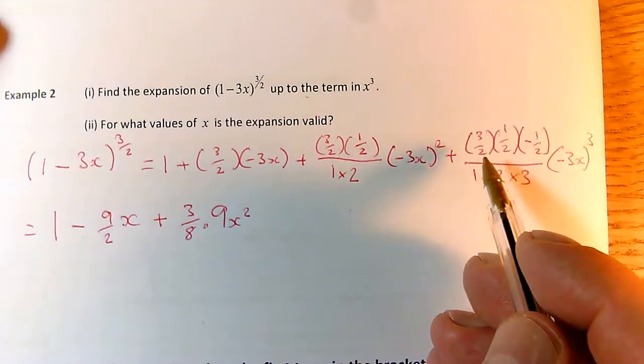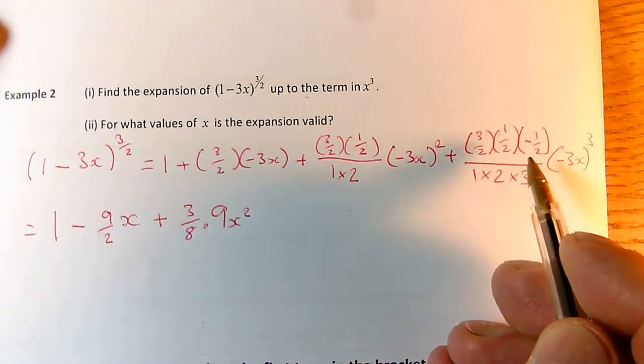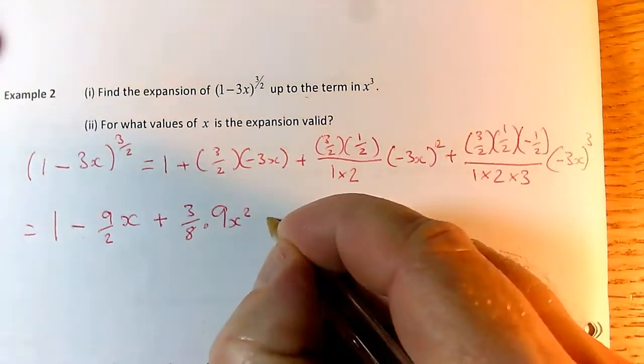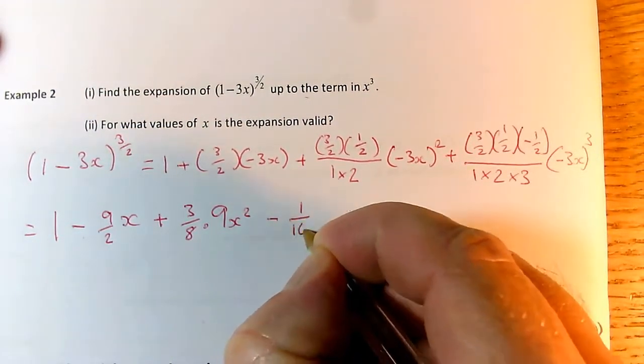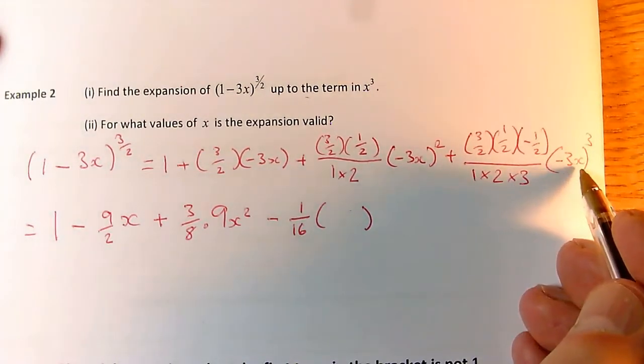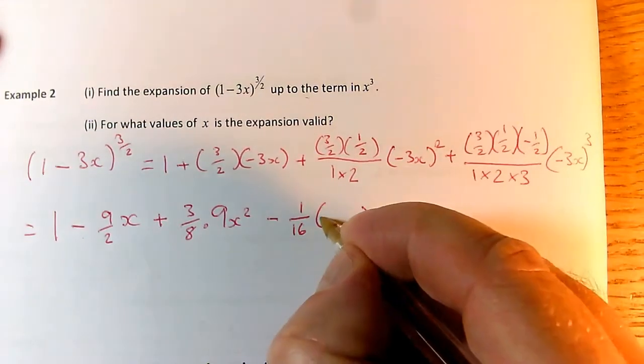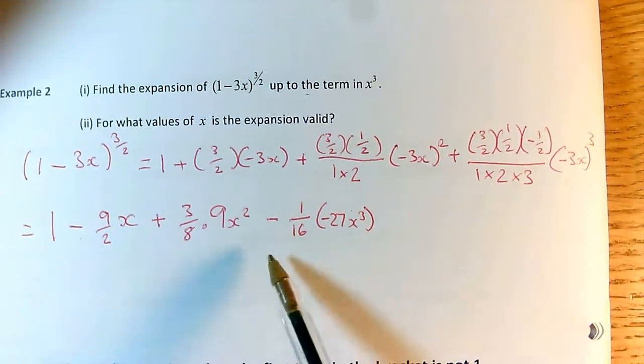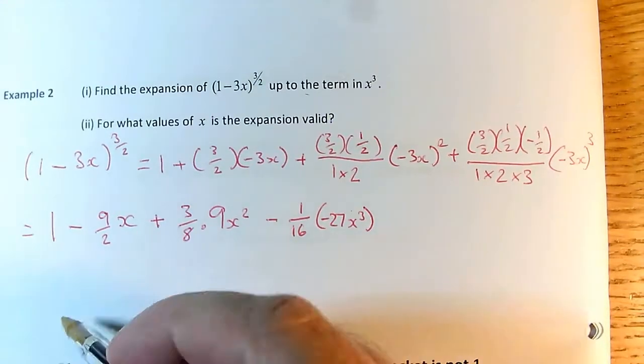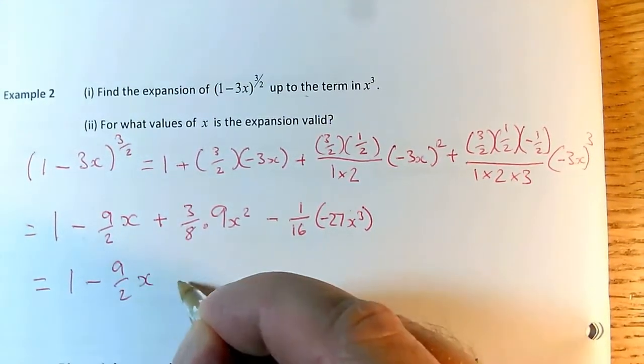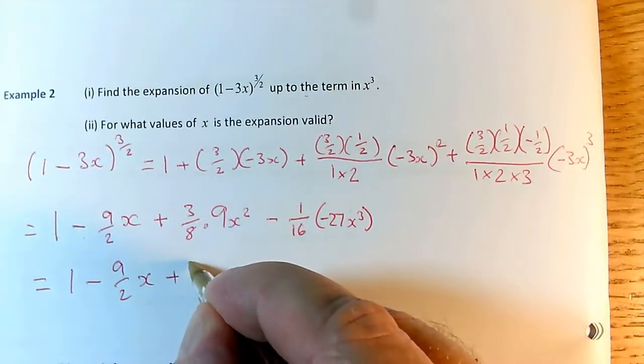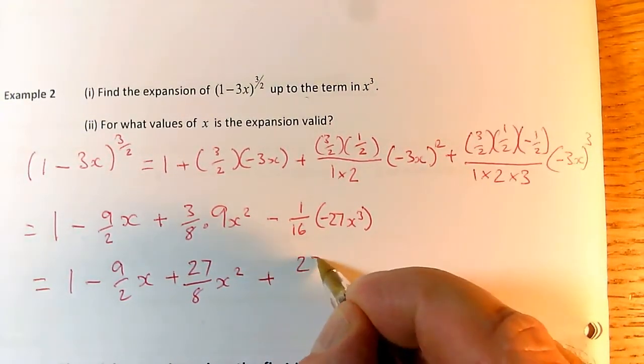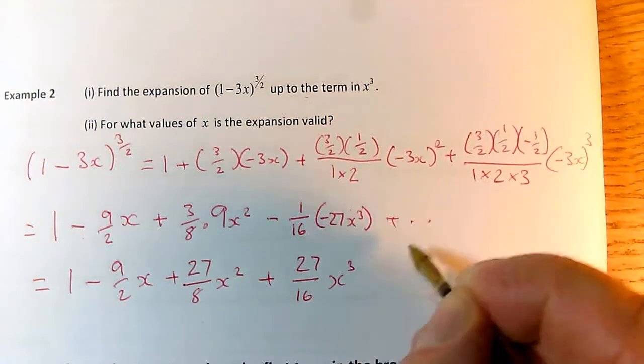And then the next term is 3 over 2 times 1 half times minus 1 half. Well, that's minus 1 eighth. Divided... Sorry, minus 3 eighths. Divided by 6. Well, 3s are going to cancel. That's going to be minus 1 sixteenth. So minus 1 sixteenth times minus 3x cubed. Well, a minus 3 cubed is minus 27. And of course, I get x cubed. So there's a bit too much going on there for you to want to simplify this term and this term straight away. So I'm going to get 1 minus 9 over 2 times x. 3 times 9 is 27. So this is plus 27 eighths x squared. And minus times minus is a plus 27 sixteenths x cubed.